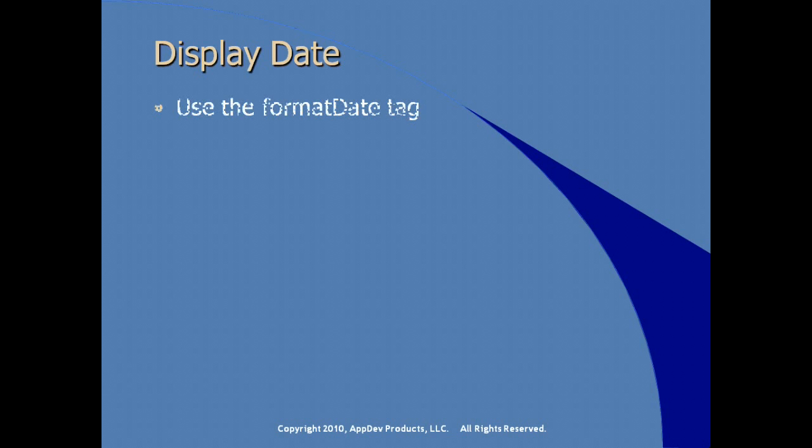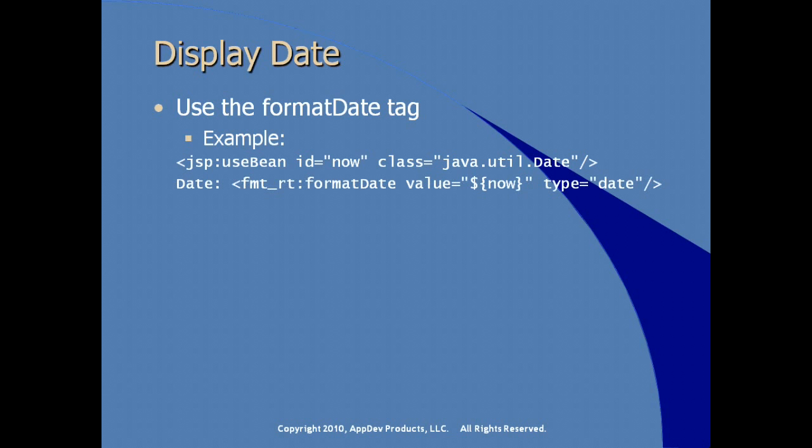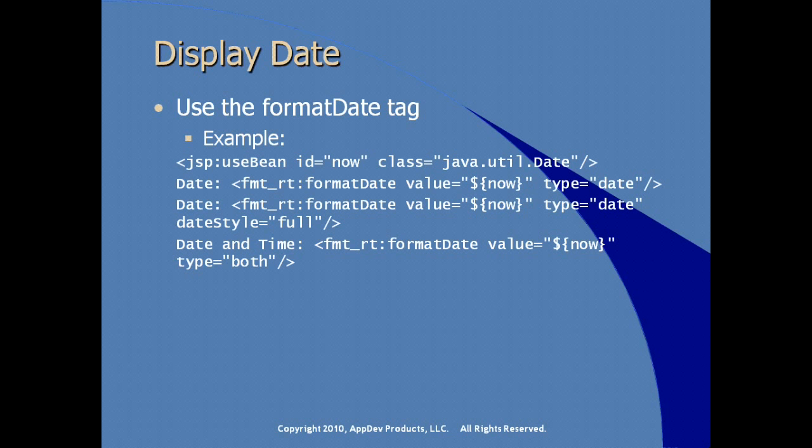Additionally, if providing internationalization, be respectful of how dates are formatted. The JSP tag libraries give us a formatDate tag. A simple example creates a Java Date object and uses formatDate with the type set to date and the dateStyle set to full to get the full month and day name. The default style shows a short name with just the month only. So let's go explore some of these tags in Eclipse and see how they work.